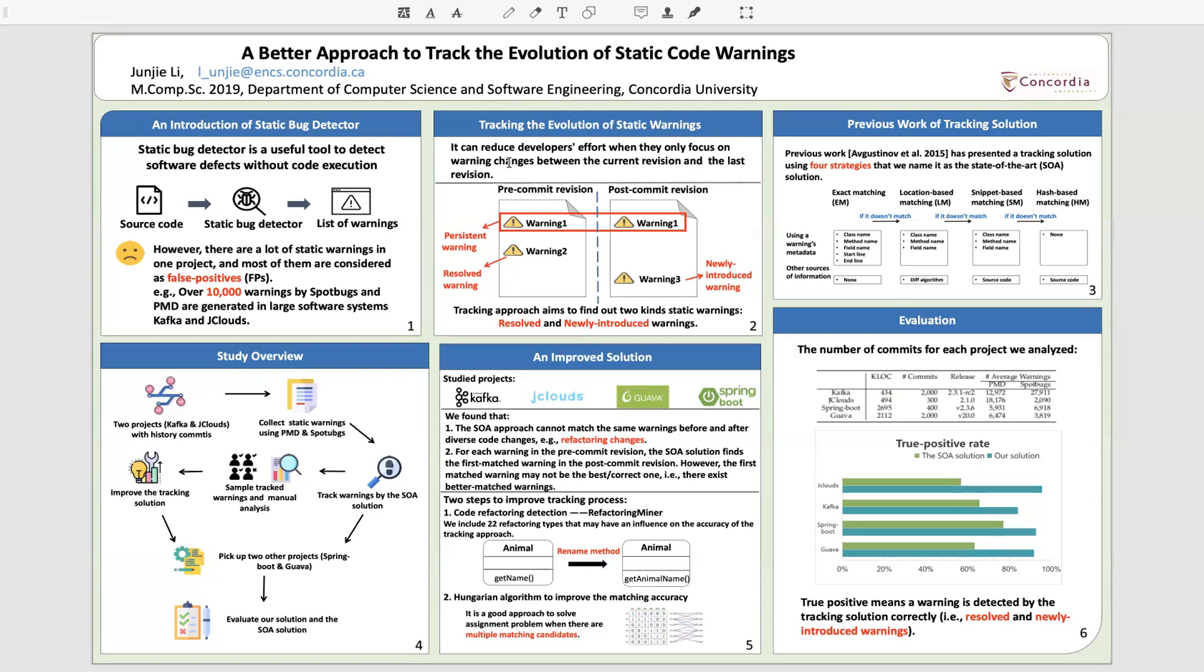Here's an example to show what tracking is. We have two revisions, pre-commit and post-commit. Warning one is in both revisions, so we name it as persistent warning.